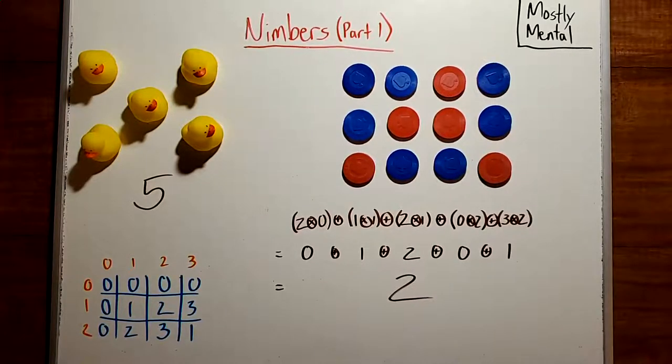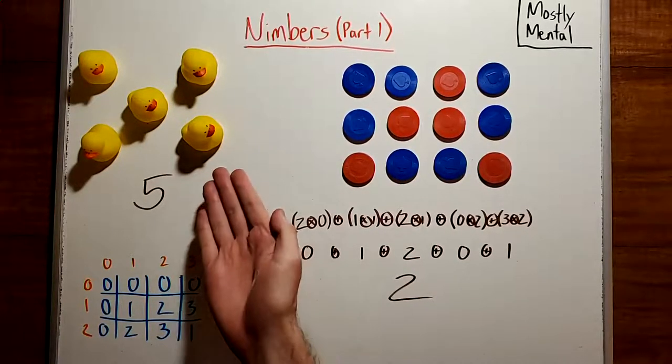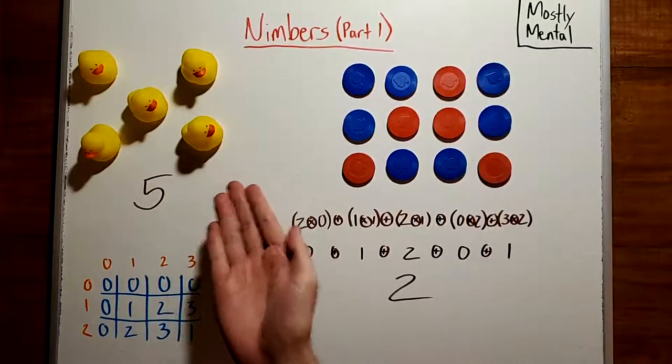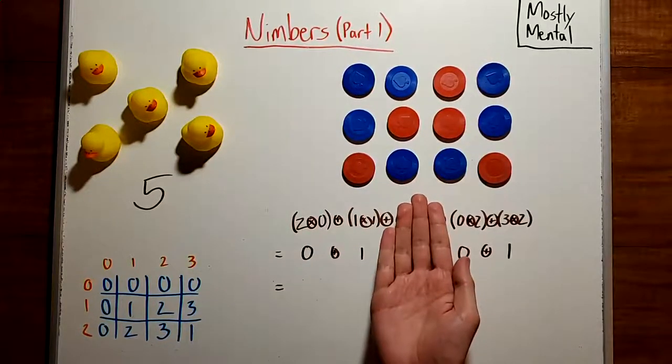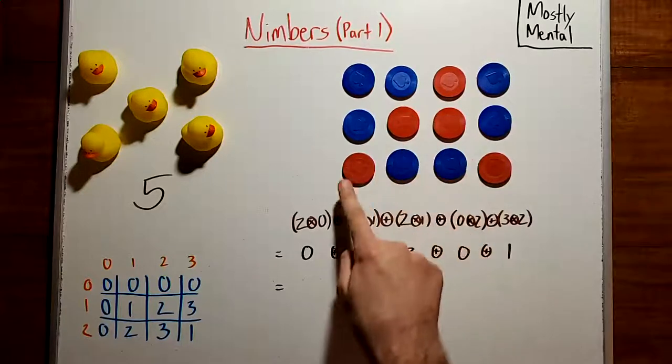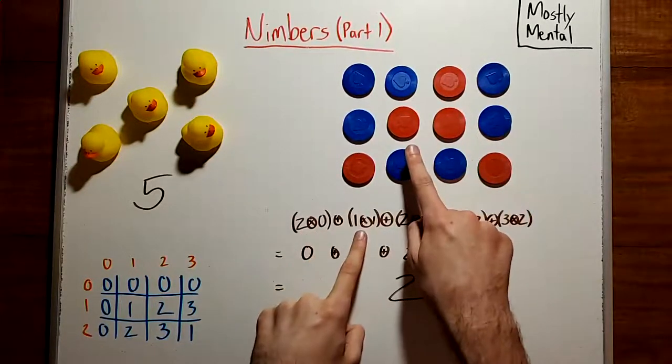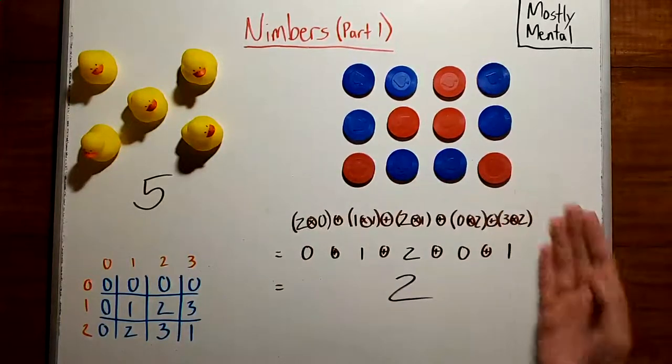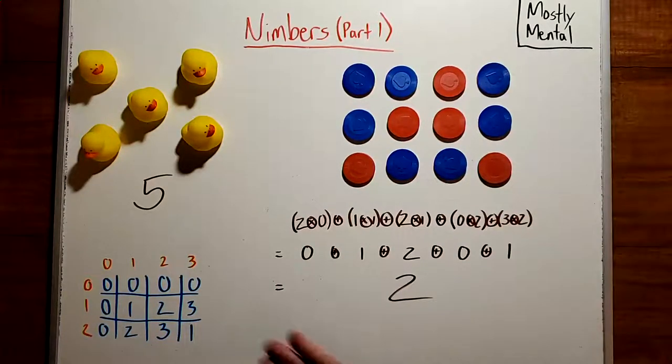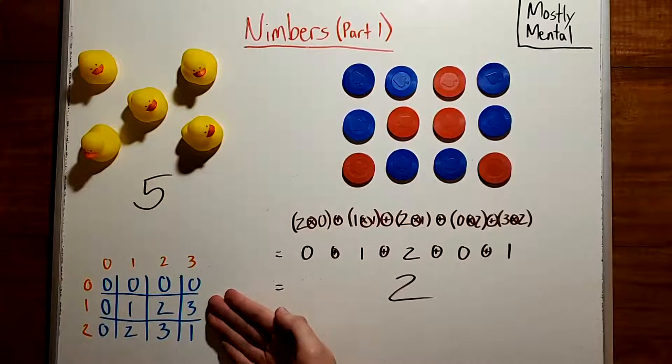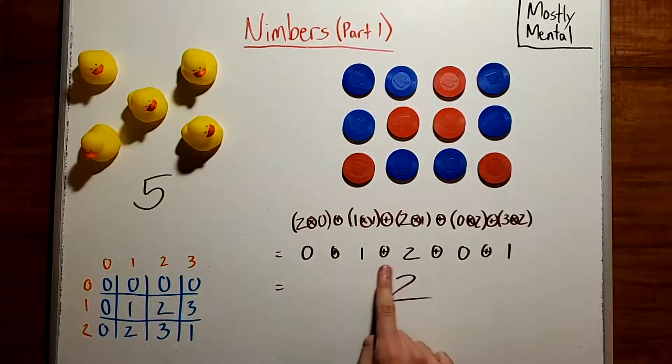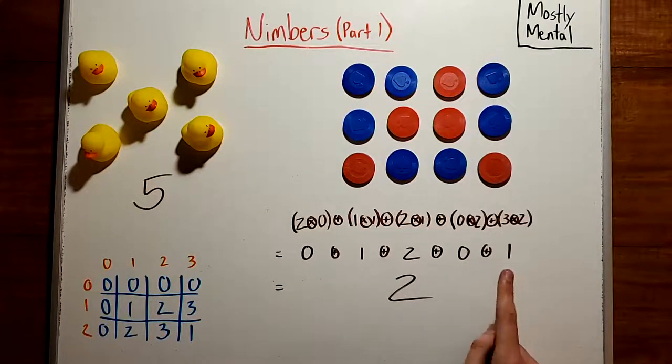For the Nim pile, that's just five, it's the number of counters. For Turning Corners, we'll look at the positions of the red coins. That'll give us two times zero, plus one times one, and so on. And looking those values up in our multiplication table, we get zero plus one plus two plus zero plus one, which is two.